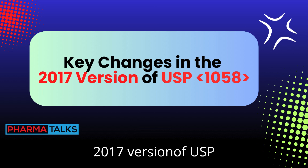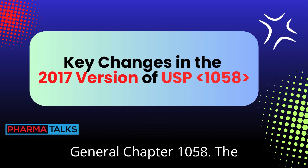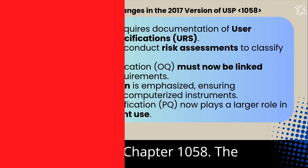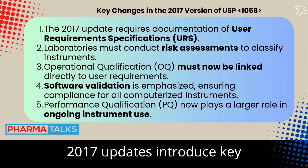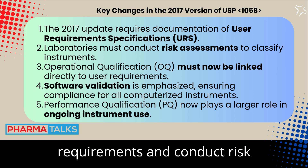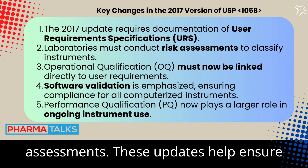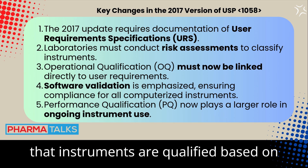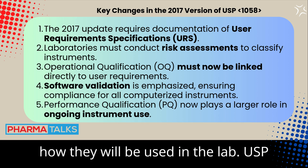The 2017 updates to USP General Chapter 1058 introduce key changes, like the need to document user requirements and conduct risk assessments. These updates help ensure that instruments are qualified based on how they will be used in the lab.